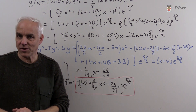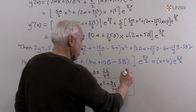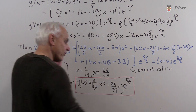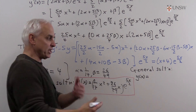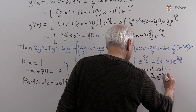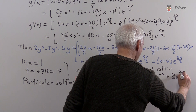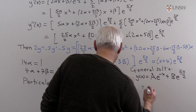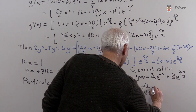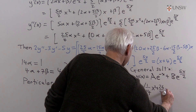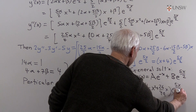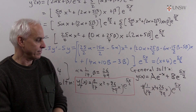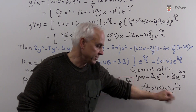That's a particular solution to the original ODE. Finally, the general solution is obtained by combining the homogeneous solution and the particular solution: y(x) = A·e^(-x) + B·e^(5x/2) + (x²/14 + 26x/49)·e^(5x/2), where A and B can be any constants. That is the general solution — homogeneous part plus particular solution, added together.